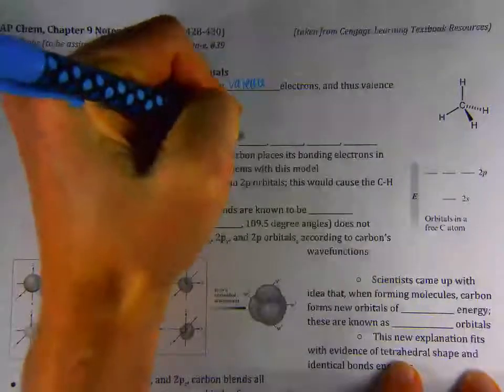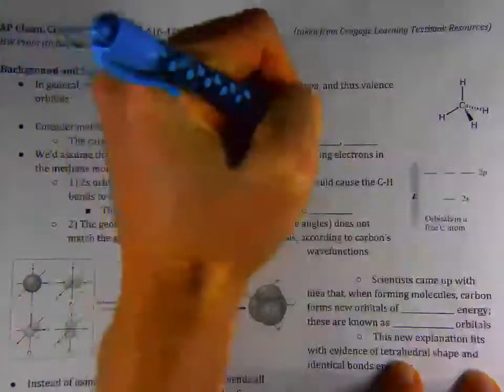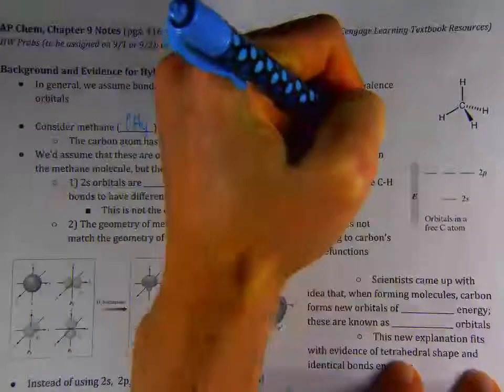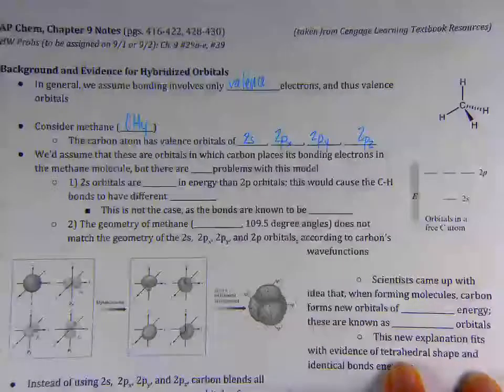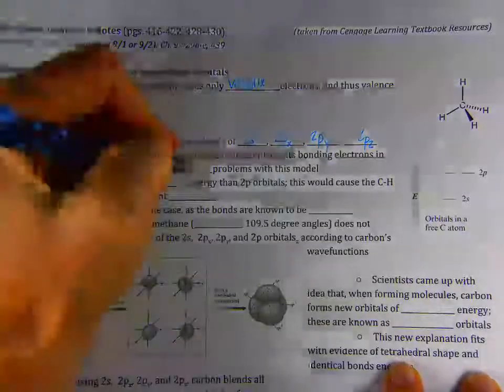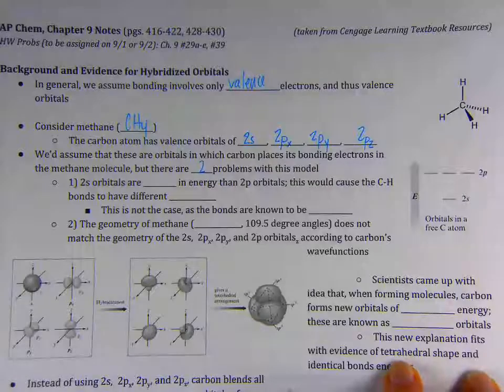The valence orbitals for carbon, and we're assuming that this is probably where the bonds are taking place, those are going to be the 2s orbital, the 2px, the 2py, and the 2pz orbitals. These are the four valence orbitals that carbon would have. So we'd assume that that's where bonding electrons are, but there are two big problems with these assumptions.